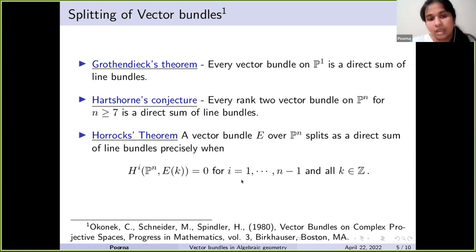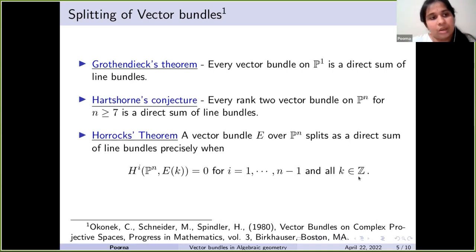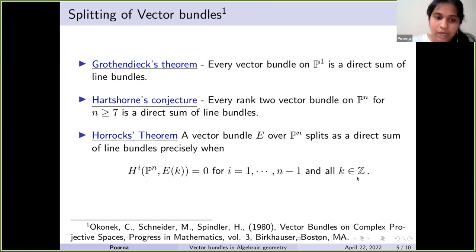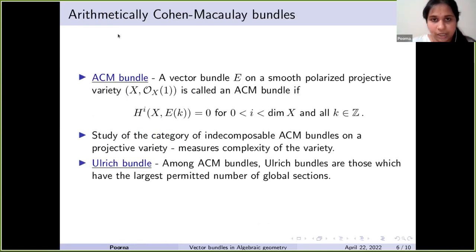This was a seminal result in the sense that mathematicians observed this condition could be studied in isolation for other projective varieties as well. Over projective space these vector bundles satisfying the vanishing condition are clearly special, and people suspected they would also be special over other varieties — and indeed that turned out to be true. Such vector bundles are called arithmetically Cohen-Macaulay bundles, or ACM bundles.